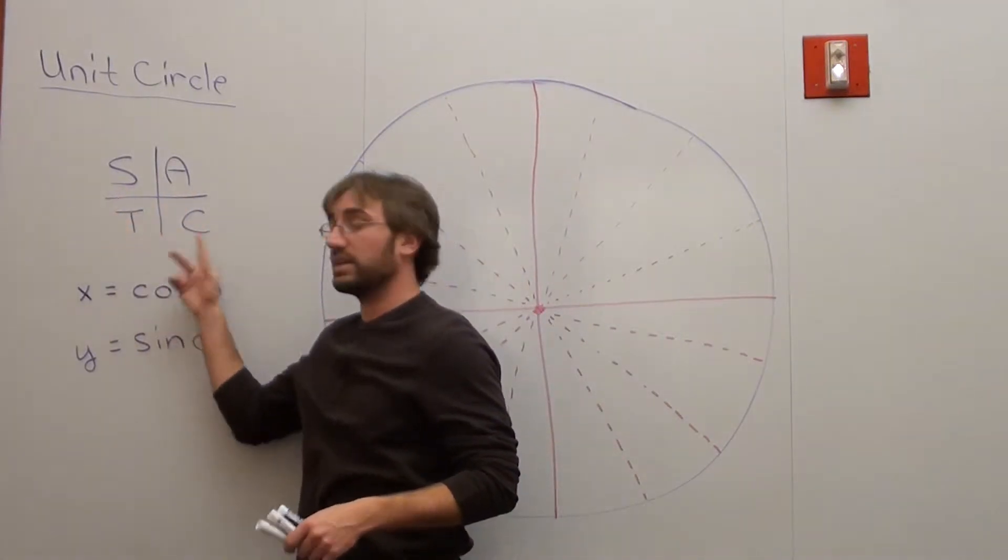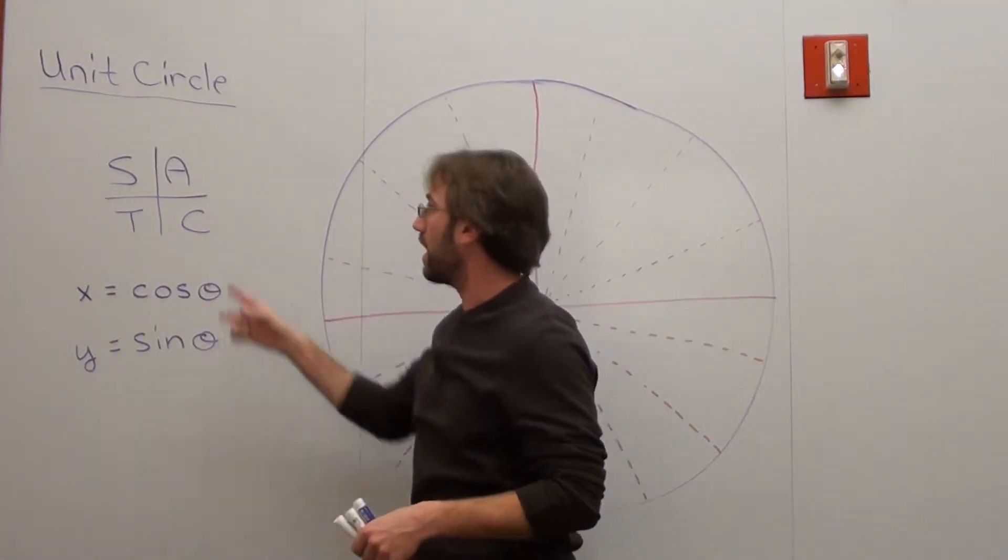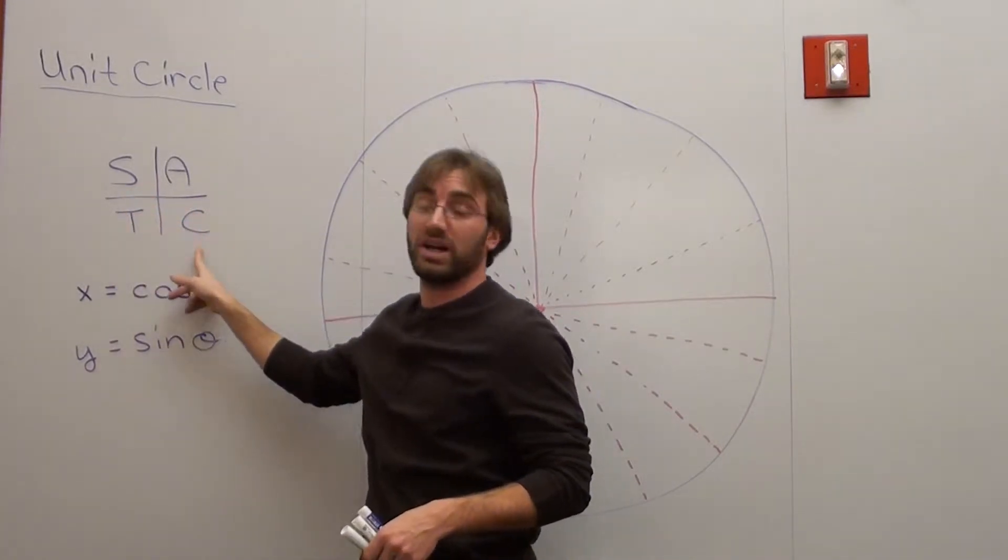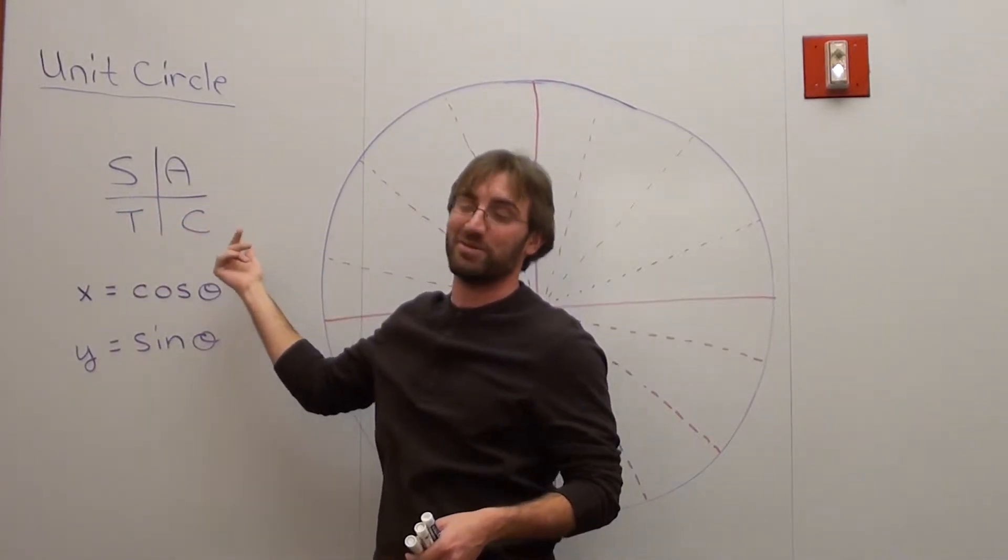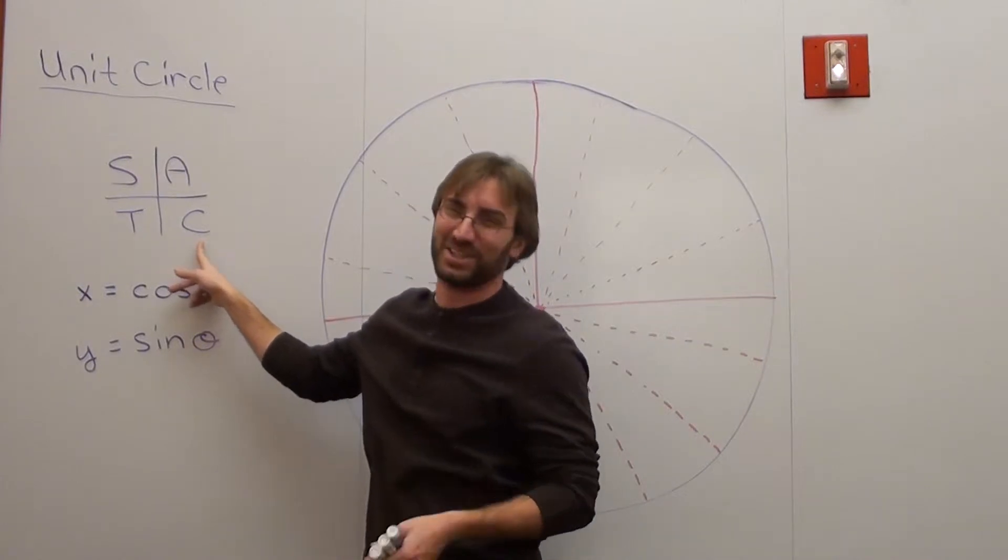All students take calculus. All of them are positive. Sine is only positive. Tangent is only positive. It's about to say chemistry. Cosine is actually positive here. Something else to keep in mind.